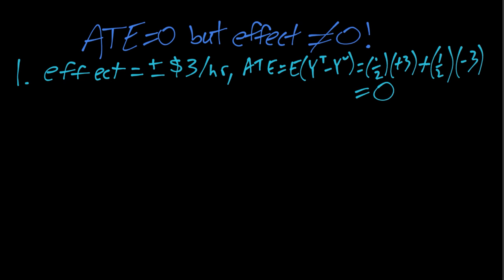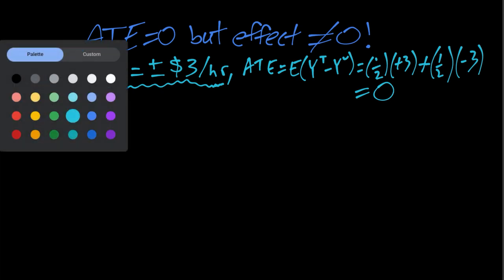But this is misleading because actually there is no individual in the population who has a zero effect. Everybody has a big effect of $3 an hour, it's just half of them it's positive and half of them it's negative. And that's the first example.